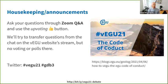Before we turn to our debaters, some brief announcements. Please use the Zoom Q&A feature to ask your questions and help us find the most interesting questions by using the voting buttons. Please note that participants joining via the live stream on the VEGU website using Vimeo won't be able to ask questions directly, but we will monitor the chat and try to transfer questions to Zoom. Please understand there is a delay in the stream and you won't be able to vote on questions or participate in polls, so please join the Zoom webinar if you can. If you're on Twitter, use the event hashtags VEGU21 and hashtag GDB3.